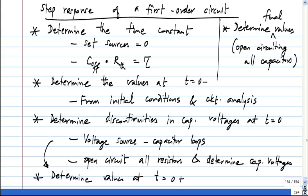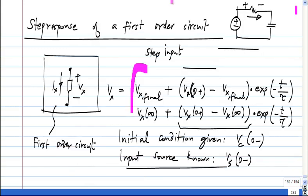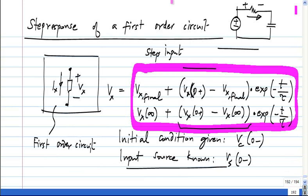Finally, the solution would be of this form. I mean, I've written it in terms of voltages, but it could be currents also. This is zero plus. So to find out this, you have to find out if there are any discontinuities at t equal to zero.